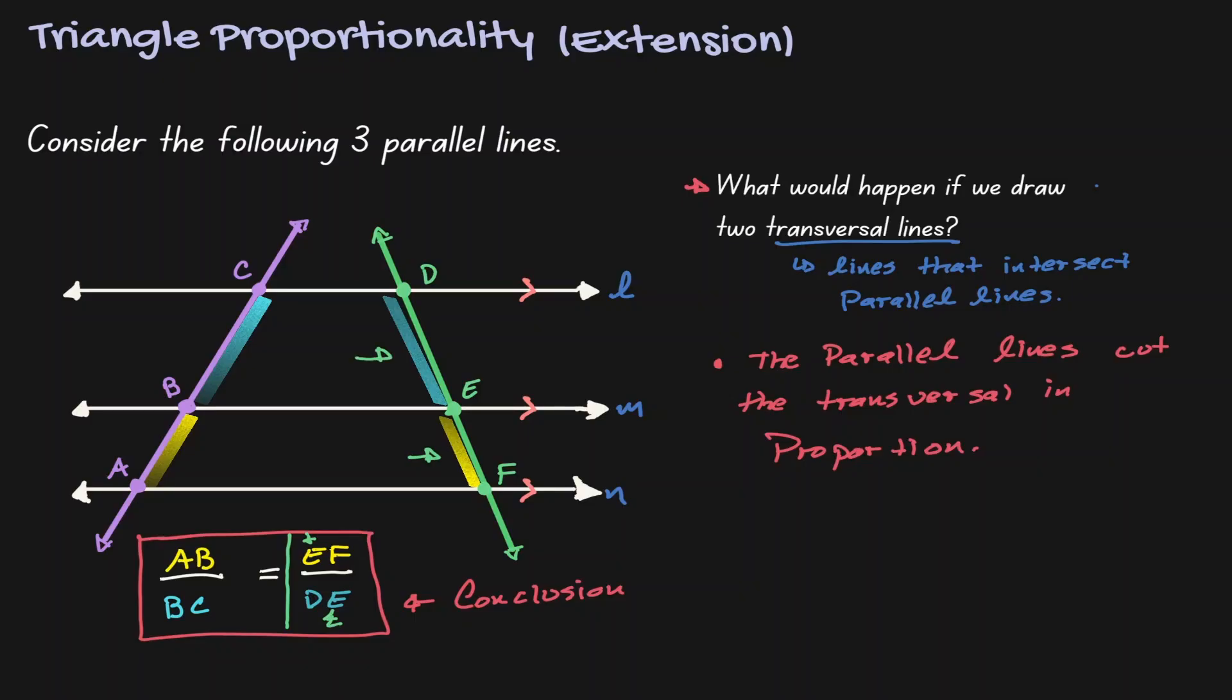EF and DE, and notice that the numerators, they're opposite from each other. And this will always occur when three parallel lines are cut by two transversals. Those transversals will always be cut in proportion.